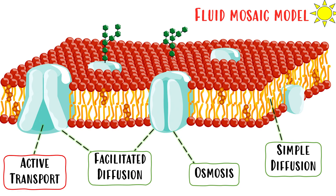For membrane transport, you need to understand four kinds: simple diffusion, osmosis, facilitated diffusion, and active transport. You need to know all of these and we're going to make them very clear in this video.